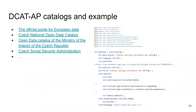There are catalogs implementing DCAT-AP in the real world — some examples from the Czech Republic, and the official portal of European data, which you may have used for your semester projects. This portal also has a SPARQL endpoint containing all metadata according to DCAT-AP.